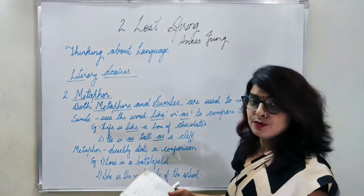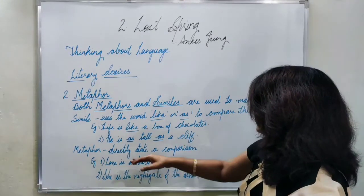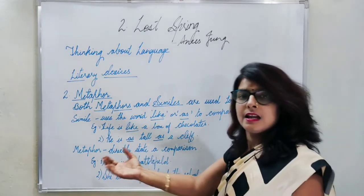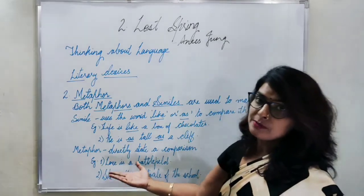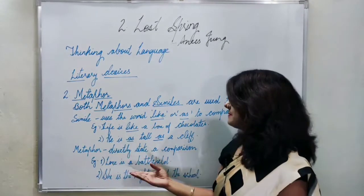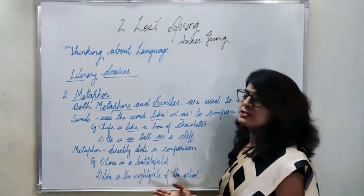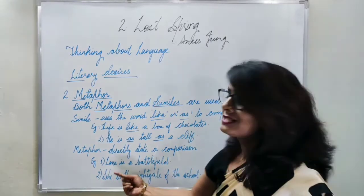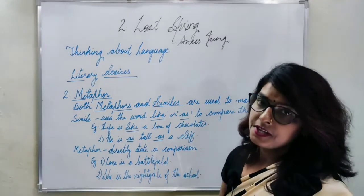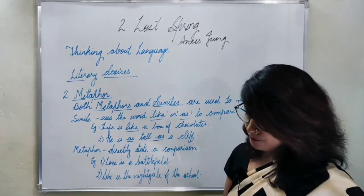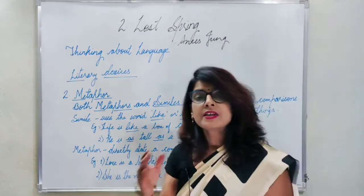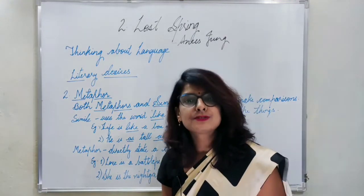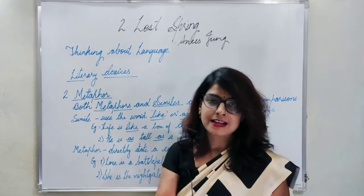Metaphor directly states a comparison without using 'like' or 'as.' For example: 'Love is a battlefield' — love is directly called a battlefield. If it were simile, it would say 'love is like a battlefield.' Another example: 'She is the nightingale of the school' — the girl is directly called a nightingale. That's metaphor. The phrase 'drowned in an air of desolation' directly compares the dilapidated and isolated situation of the temple, so metaphor is used.